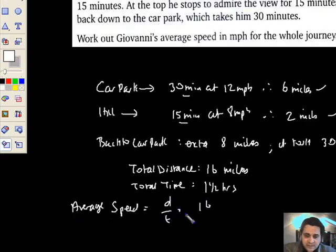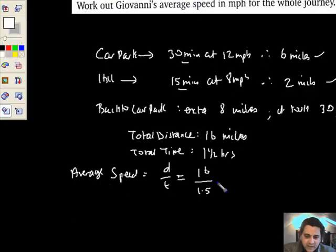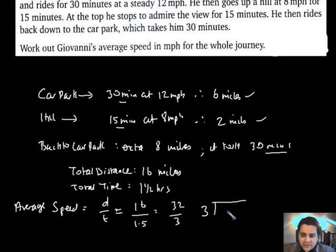So total distance 16, divide that by 1.5. Well let's just call that 32 divided by 3, makes life an awful lot easier playing with whole numbers. And I can see, if I do a short division sum, I've got to land it quite easily.